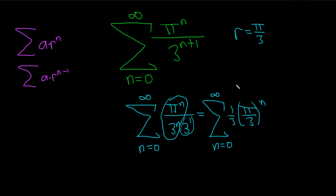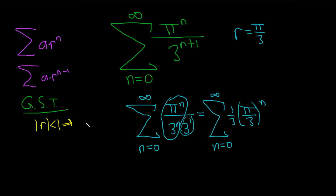Now we can use what's called the Geometric Series Test, or GST. The geometric series test says: if the absolute value of r is less than 1, then your series converges. And if the absolute value of r is greater than or equal to 1, then your series diverges.